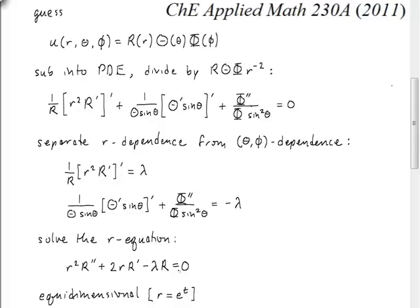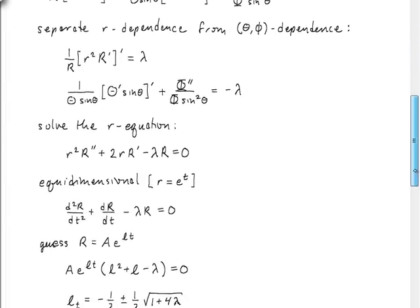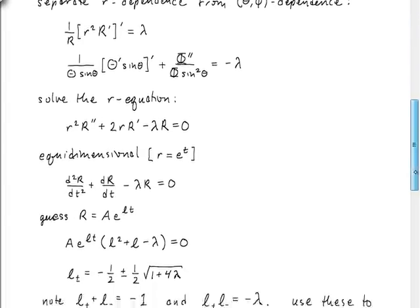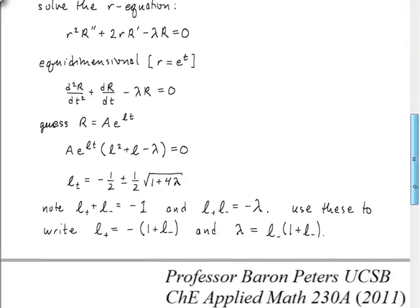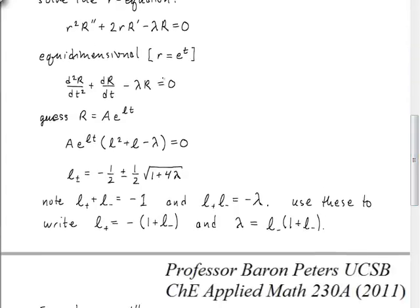So we have one equation for r, and we have another equation for the theta and the phi. First, what we're going to do is go through and solve the r equation. This is an equidimensional equation. We can convert that into an equation with constant coefficients by just going through and making the substitution r equals e to the t. And t now has nothing to do with time. It's just standing in, holding a place in this problem for the time being.